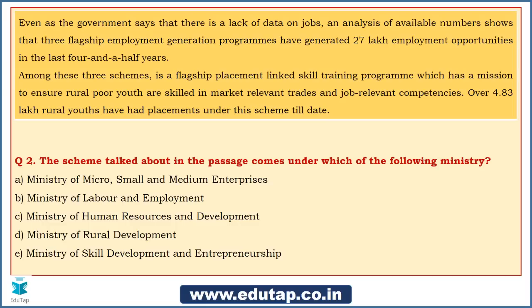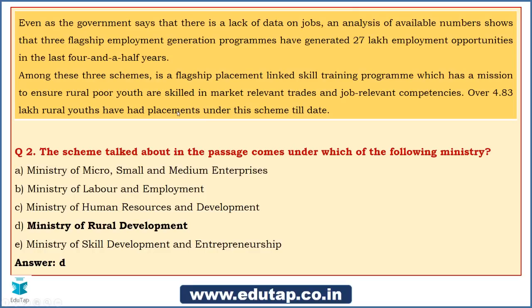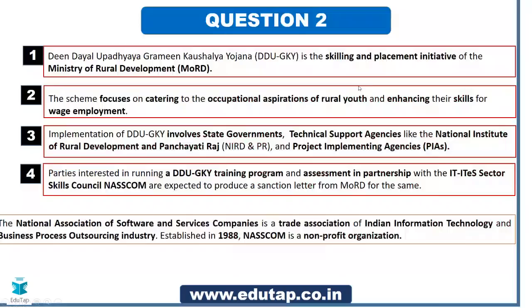Most of you are coming up with Ministry of Rural Development. The answer is D — Ministry of Rural Development. The reason I included this question is that the second paragraph clearly mentions 'placement-linked skill training program,' which is a key phrase that can mislead you into thinking it falls under the Ministry of Skill Development and Entrepreneurship. That is a very obvious mistake most of us would make — so make sure you do not make this mistake in the examination. DDU-GKY comes under the Ministry of Rural Development.